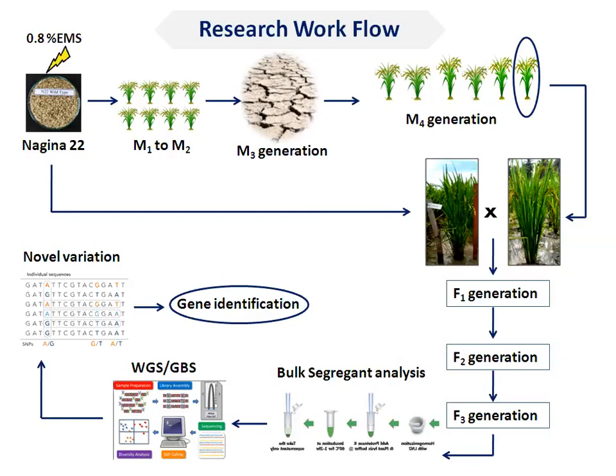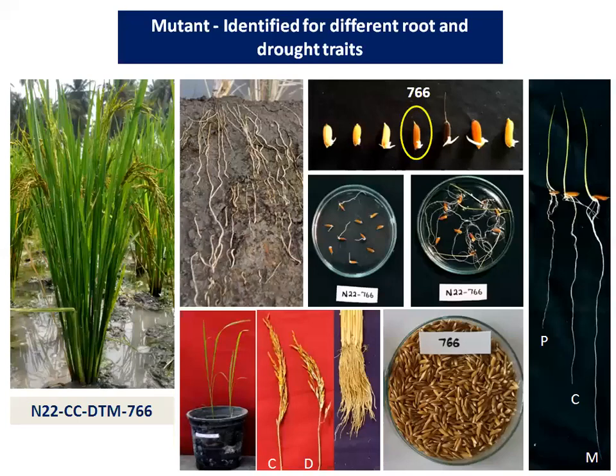I screened a thousand entries and identified 12 mutants as better than the parent. Surprisingly, I found a mutant with a different root architecture. This mutant is named N22 CC DTM 766, and it performed better than Nagina 22 — my parent — in terms of early vigor, root architecture, as well as reduced spikelet sterility.